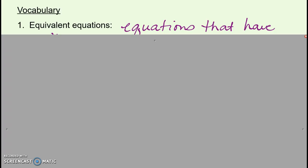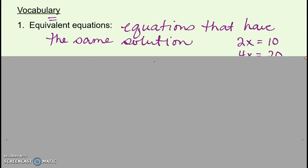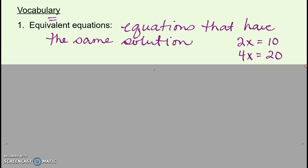For vocabulary, the first term is equivalent equations. Equivalent just means equal value. So equivalent equations means two equations that have the same solution — the same answer. For example, 2x equals 10 and 4x equals 20 are equivalent equations, because plugging in 5 works for both: 2 times 5 is 10, and 4 times 5 is 20. Two different equations, but the same solution.